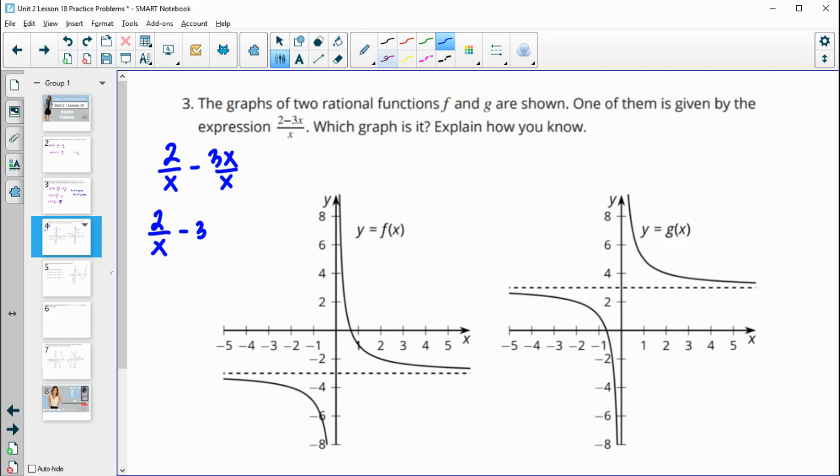And that constant is going to be your end behavior asymptote or your horizontal asymptote. And so this one, this horizontal asymptote matches right here. So we can see this down at y equals negative 3. So this f(x) is this function.